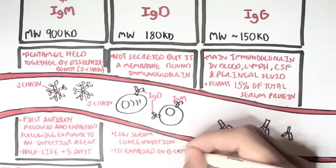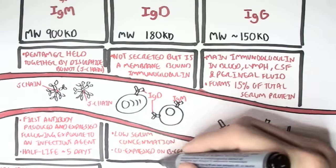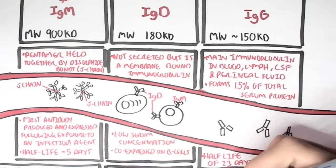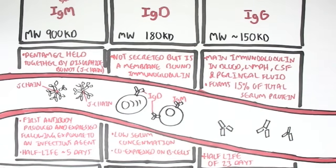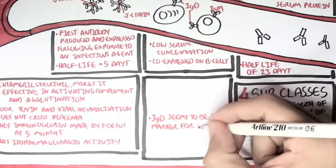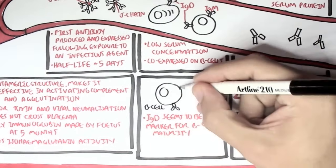IgD can be co-expressed on B cells. So, the B cell, which has not become a plasma cell, can have both IgD and IgM. And so, IgD seems to be a marker for B cell maturity. So,